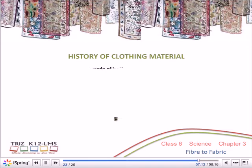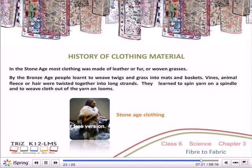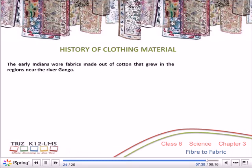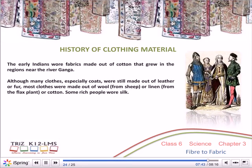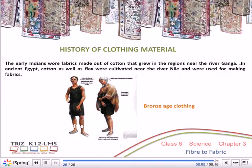History of Clothing Material: In the Stone Age, most clothing was made of leather, fur, or woven grasses. By the Bronze Age, people learned to weave twigs and grass into mats and baskets, and to twist vines and animal fleece into long strands. They learned to spin yarn on a spindle and weave cloth on looms. Early Indians wore fabrics made of cotton grown near the river Ganga. In the Middle Ages, the spinning wheel was invented, making spinning about four times faster. In ancient Egypt, cotton and flax were cultivated near the river Nile and used for making fabrics.